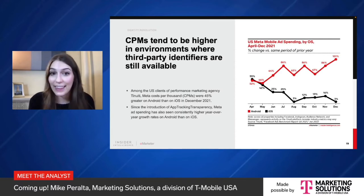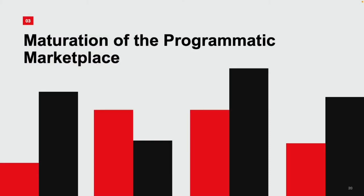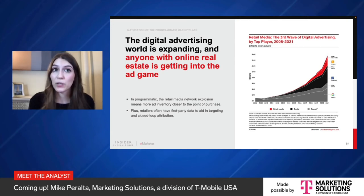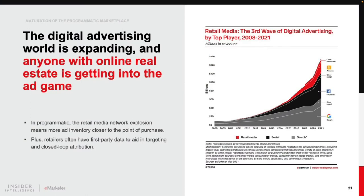That brings us to our final topic: maturation in the programmatic marketplace. Programmatic buying has been around for a while now — it is no longer the new kid on the block, and like any industry, it's got a life cycle. The digital advertising ecosystem is getting bigger every time another retailer jumps on the retail media network bandwagon, meaning more programmatic inventory that's close to the consumer's point of purchase. It also brings retailers' first-party data into the picture, which is incredibly valuable as advertisers experience signal loss elsewhere in the digital ad ecosystem.